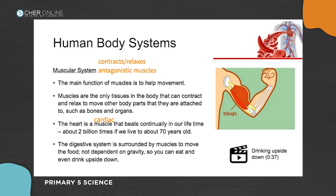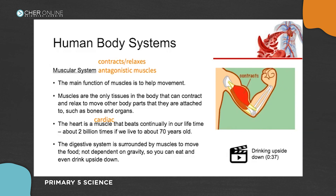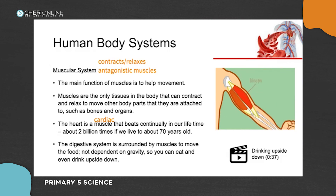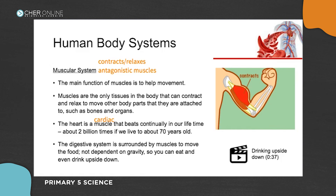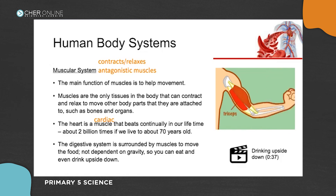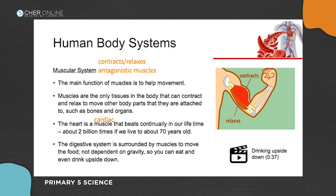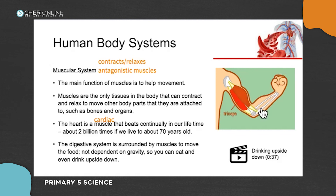The digestive system is also surrounded by muscles all the way from the gullet down through the stomach, small intestine, large intestine, to the rectum. Without these muscles, food cannot be pushed down the digestive tract in a single direction. To show this, let's think about what happens when you try to drink water upside down — do you think you can? What happens when you swallow — does the water come out of your nose?